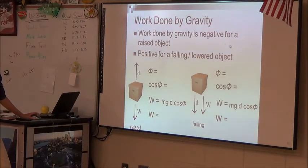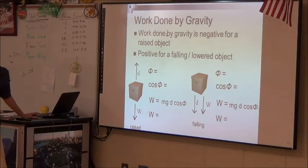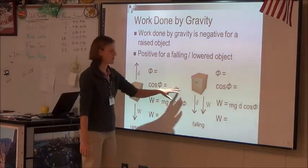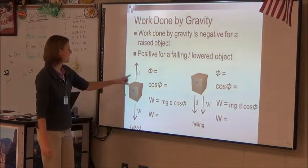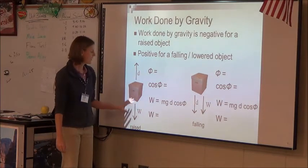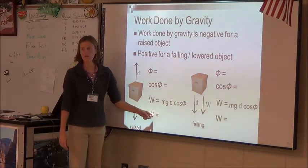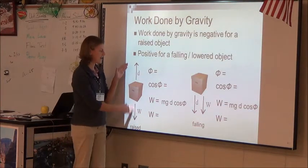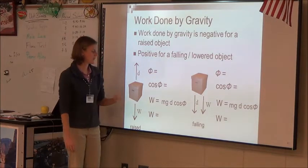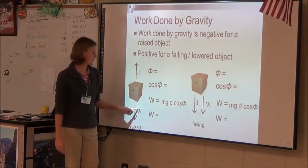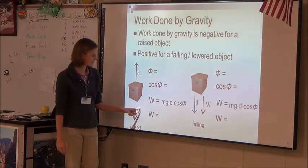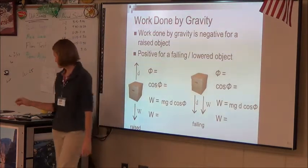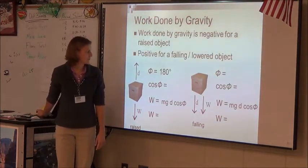Work done by gravity, just realize the force of gravity is pulling objects down. So if that force is down, you just have to consider, well, is your object going up or down? If your object is going up, what is the sign going to be for the work due to the force of gravity? Negative. When they don't match, you're going to end up with a negative work. What would that make the angle between these two vectors? The angle between these two vectors is 180, and the cosine of 180 was negative one.